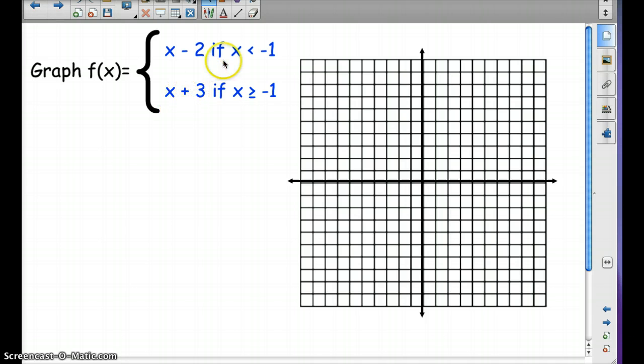For example, we need to see what the value is at negative 1. So I'm going to go ahead and start there. So f of x equals x minus 2. When I plug in negative 1, I'm going to get negative 1 minus 2. So we get negative 3. So at negative 1, negative 3, 1, 2, 3.